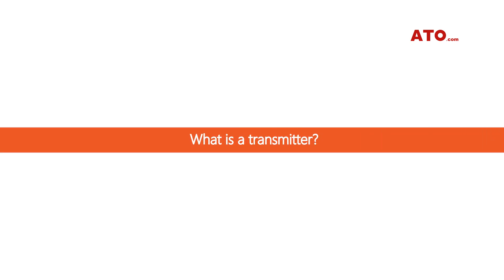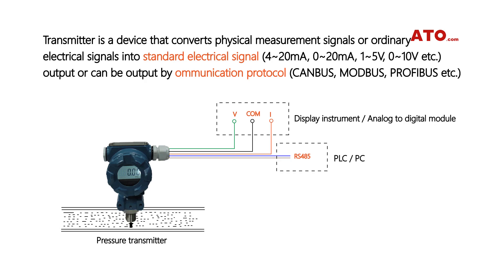Do you know what a transmitter is? A transmitter is a device that converts physical measurement signals or ordinary electrical signals into standard electrical signal output, or can be output by communication protocol.